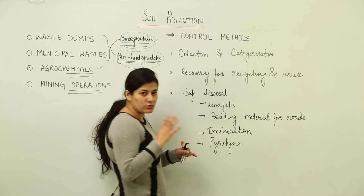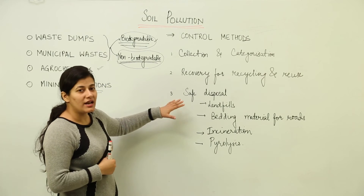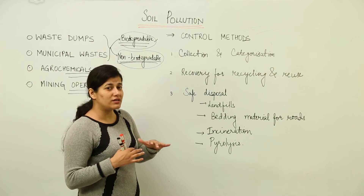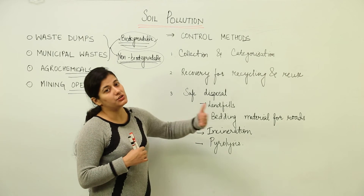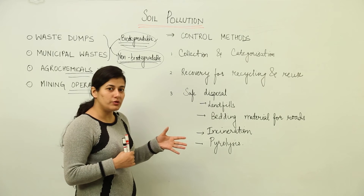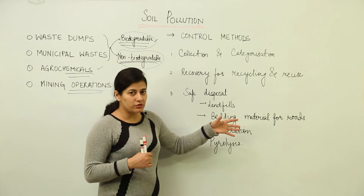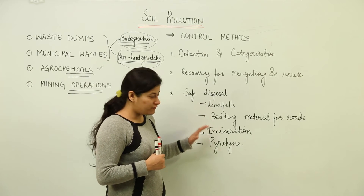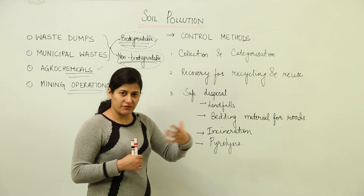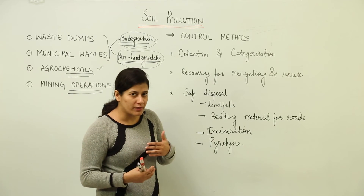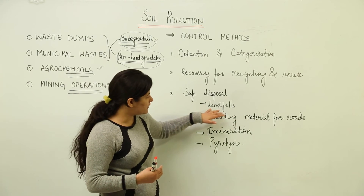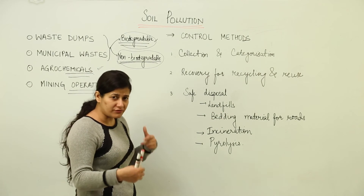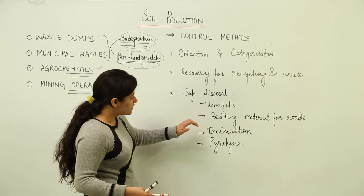Safe disposal must ensure that protecting soil from pollution doesn't cause another environmental hazard like air or water pollution. For example, simply burning dry leaves in the garden is not safe. The safest disposal method is the landfill — you dig a pit, fill the waste inside, and microbes work on it, eventually converting it into manure over time. In the outskirts or peripheries of cities, large landfills receive the entire municipal waste after the collection and recovery steps.